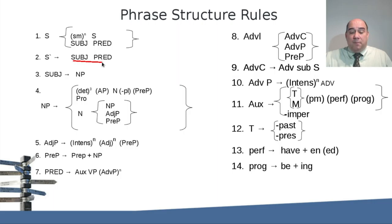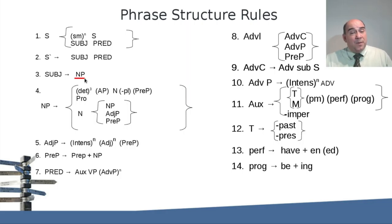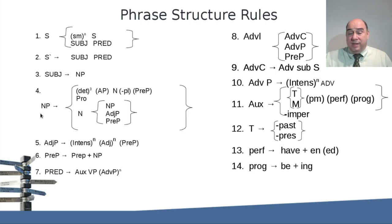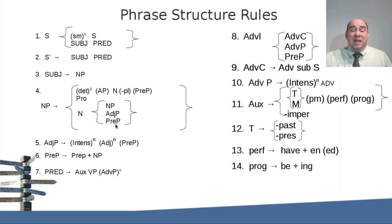A noun phrase can appear in the subject, in the predicate, or in the verb phrase. A noun phrase can contain a whole bunch of things: a determiner, an appositive, a noun, a preposition, and the noun itself can actually be a noun phrase as well. It can also have an adjective phrase or a prepositional phrase. All of these things can appear in any noun phrase.